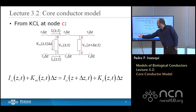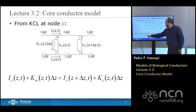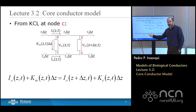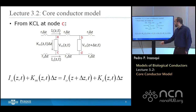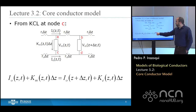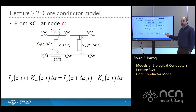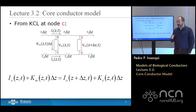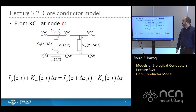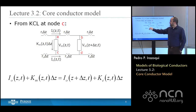Applying KCL at node C: the current flowing out of the cell at Z and T, plus the membrane current K_M at Z and T multiplied by delta Z, equals I_O evaluated at Z plus delta Z and T, plus K_E times delta Z — the electrode current per unit length, which can be zero but doesn't have to be, allowing us to explore stimulation of the neuron.